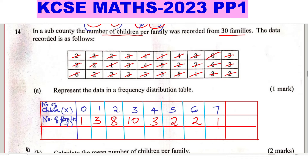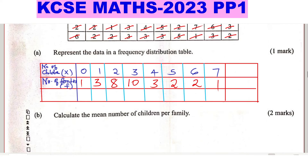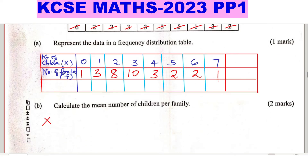Now for part B, we calculate the mean number of children per family. The mean, denoted by x̄, equals the summation of fx divided by the summation of frequency. I'll create an additional column for fx.